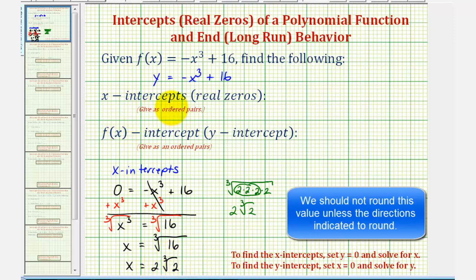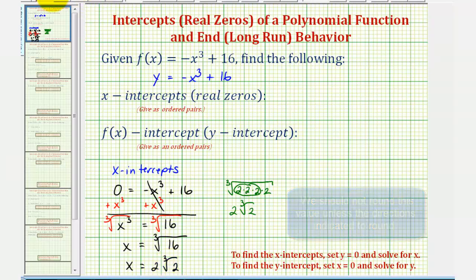We're asked to give the x-intercept as an ordered pair, so the x-coordinate would be two times the cube root of two, and the y-coordinate would be zero. We should also mention that because this is a degree three polynomial, and there's only one real zero or one x-intercept, that means the other two zeros would be complex, which we'll address in another video.